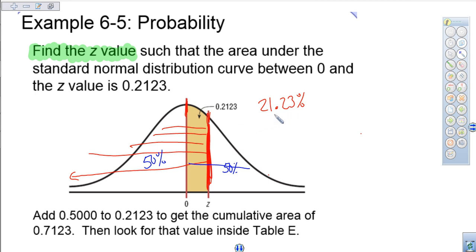So what we're going to essentially do is that we're going to take that 21.23% and we're going to add 50% to it. And we know that now we're looking at a total of 71.23%. So from this z-score all the way is my 71.23%.